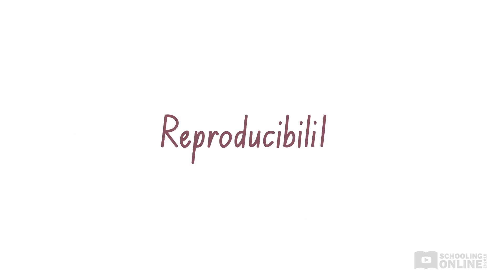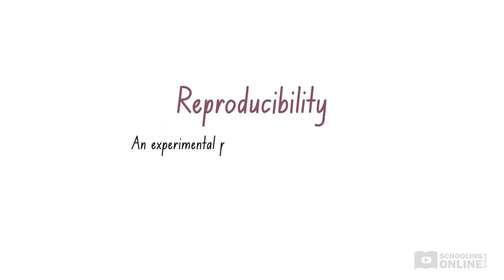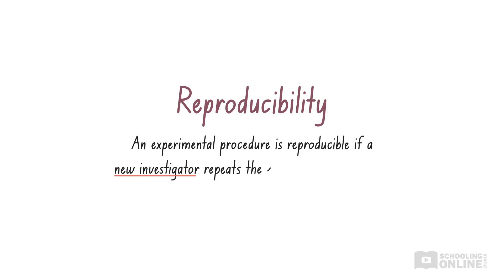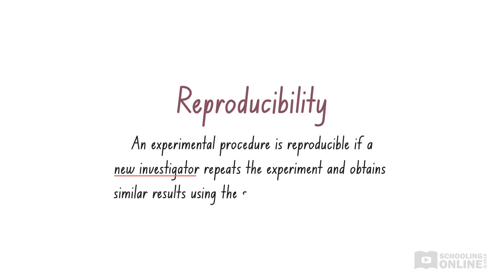Another aspect of reliability is reproducibility. An experimental procedure is reproducible if a new investigator repeats the experiment and obtains similar results using the same method and equipment. A reliable experiment is one with a high degree of reproducibility.